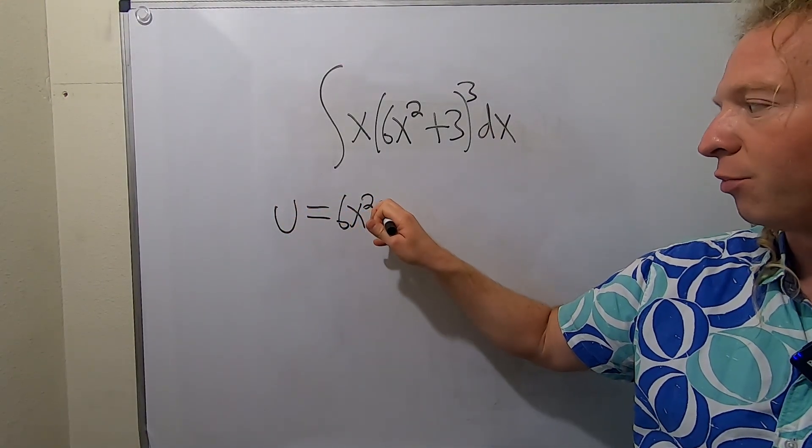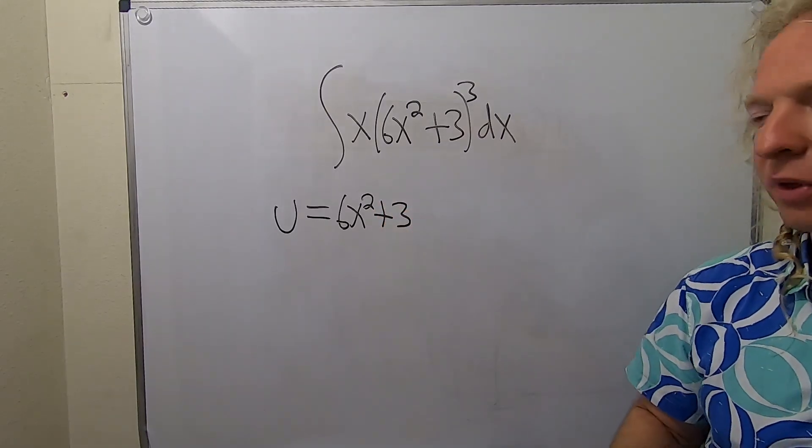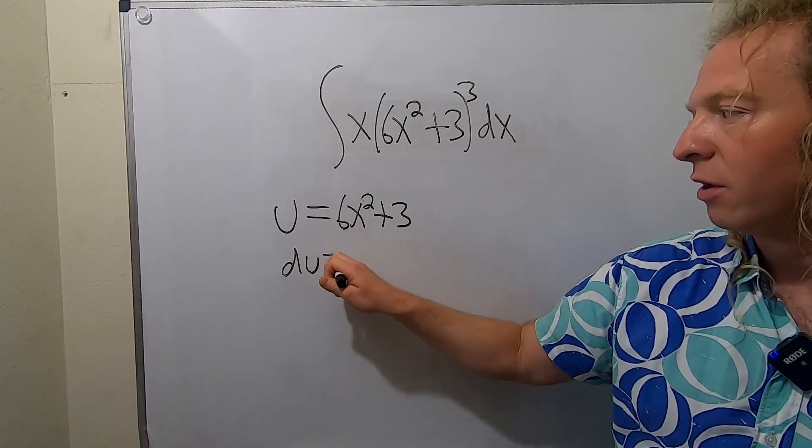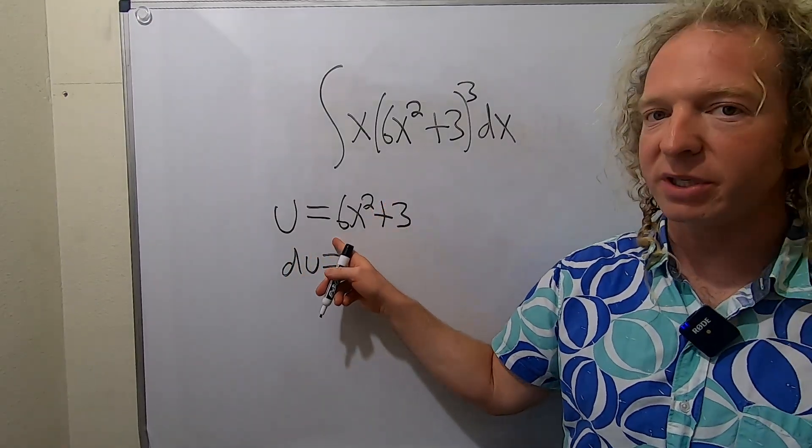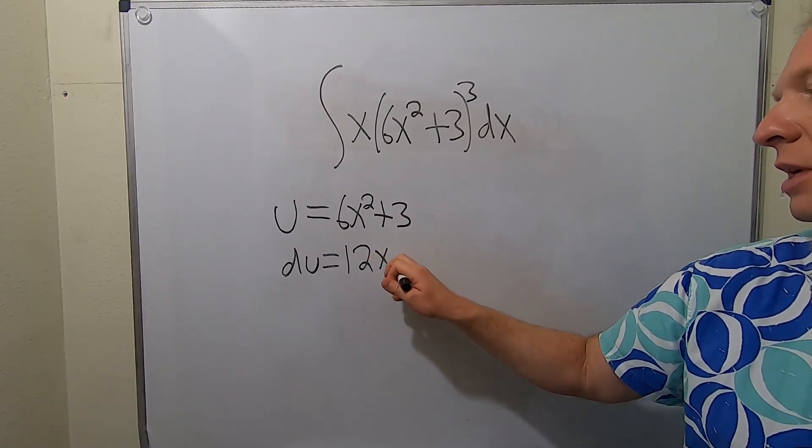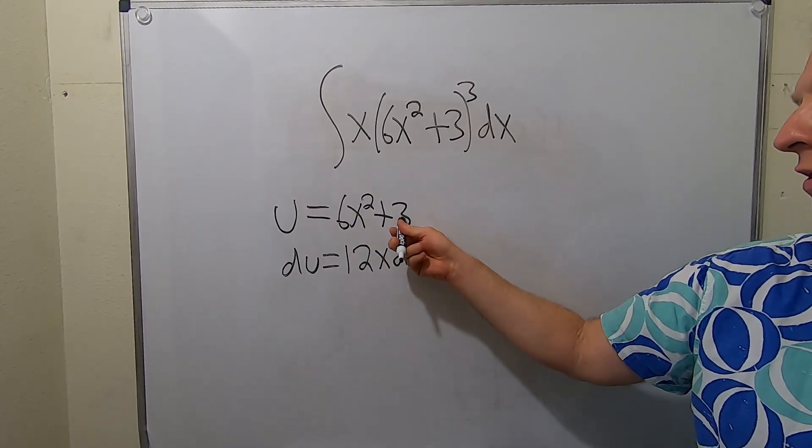Now we just take the derivative. So du: the derivative here, two times six is twelve, so this is 12x. And then don't forget the dx. The derivative here is zero so we don't write it.